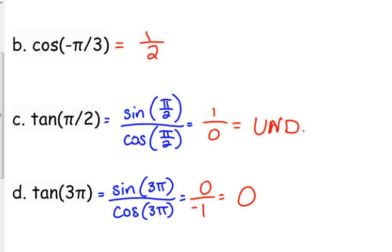You can divide 0 by a number. That is okay. And that answer is 0. Don't leave it as 0 over negative 1. 0 divided by negative 1 is 0.